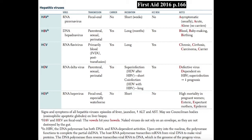Hepatitis A virus is an RNA picornavirus, transmitted primarily by the fecal-oral route. It has a short incubation time of about three weeks, and there are no asymptomatic carrier states for hepatitis A. We commonly see it in daycares and kindergartens. Remember for hepatitis A: it's asymptomatic usually, it's an acute infection, and it's alone — meaning no carriers.